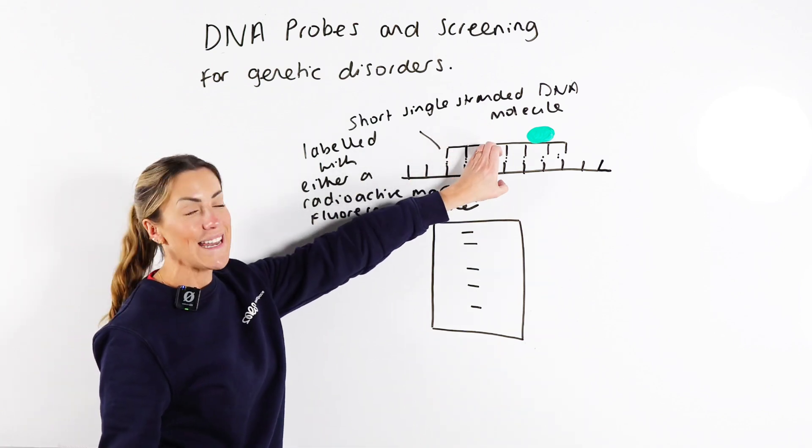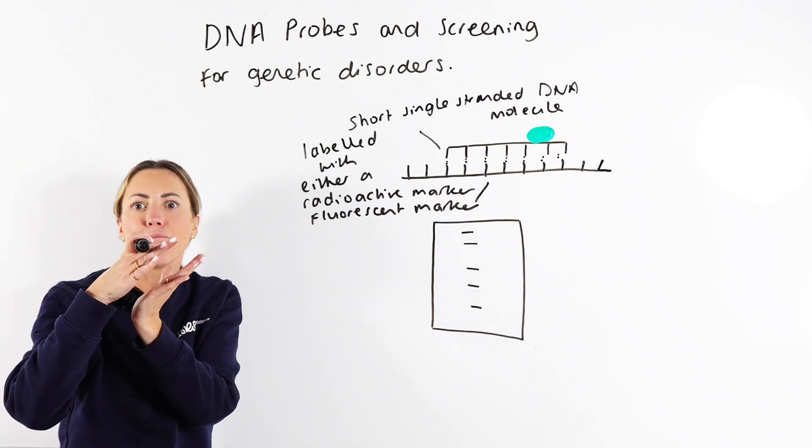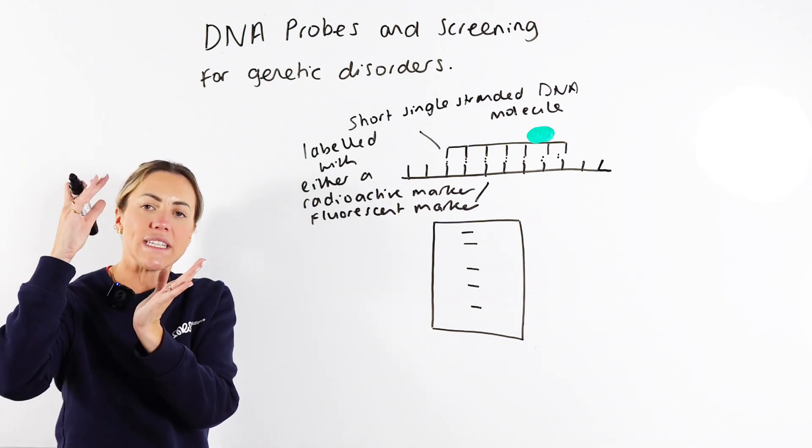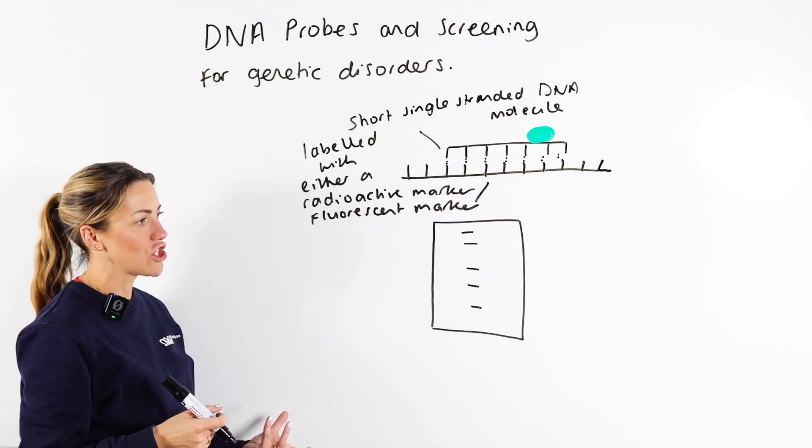So the probe is going to anneal or it's going to hybridize. It's called hybridize because it makes like hybrid DNA between the DNA probe and the individual's DNA fragment. So that's kind of how they work in a nutshell.